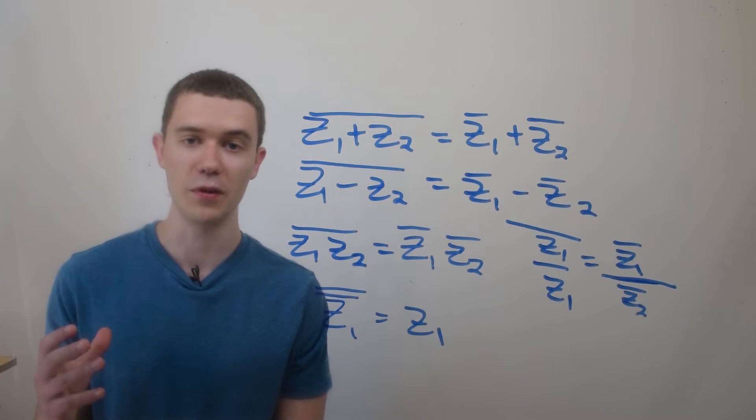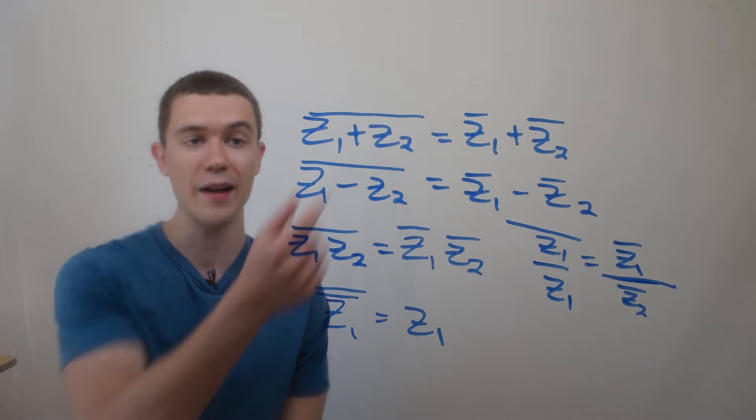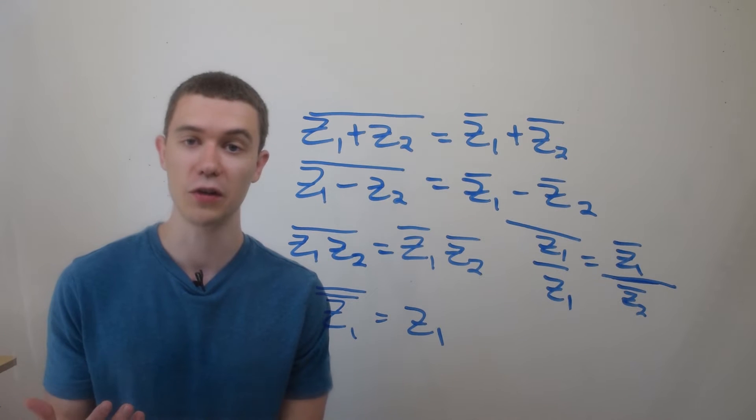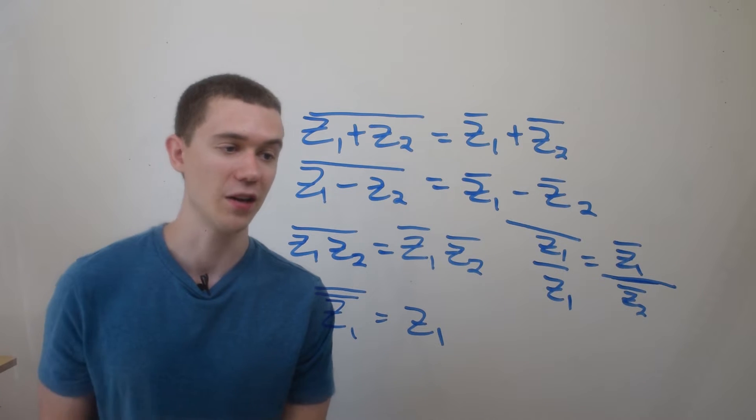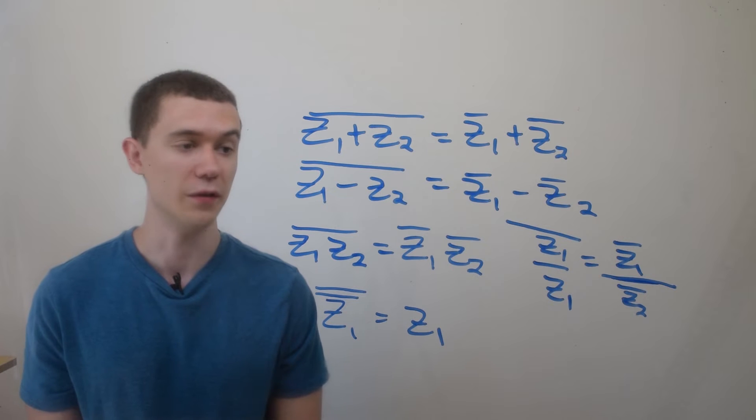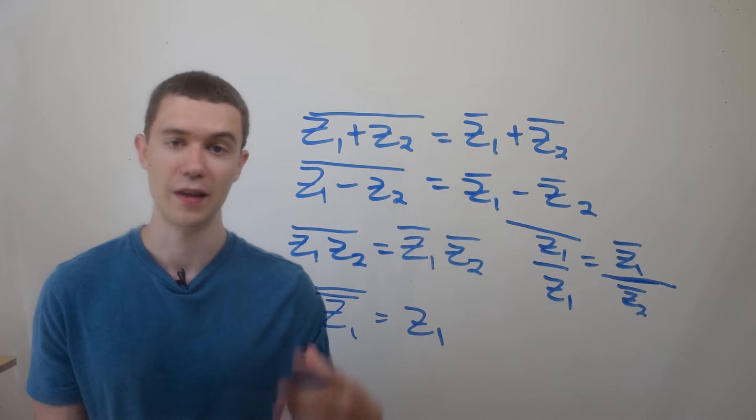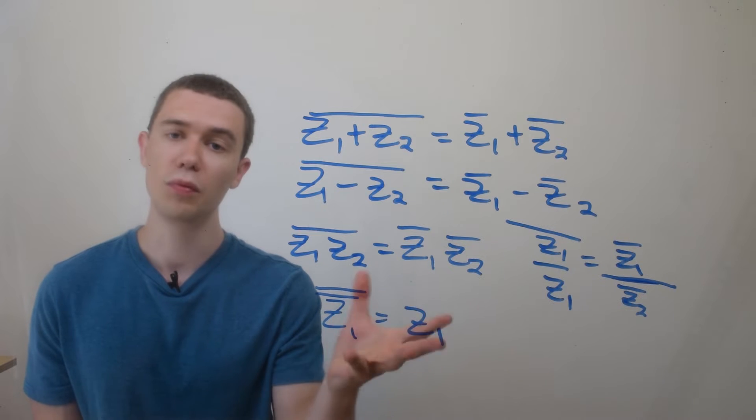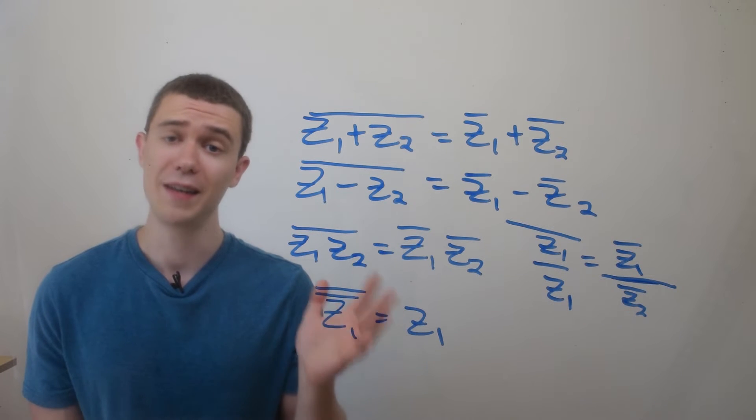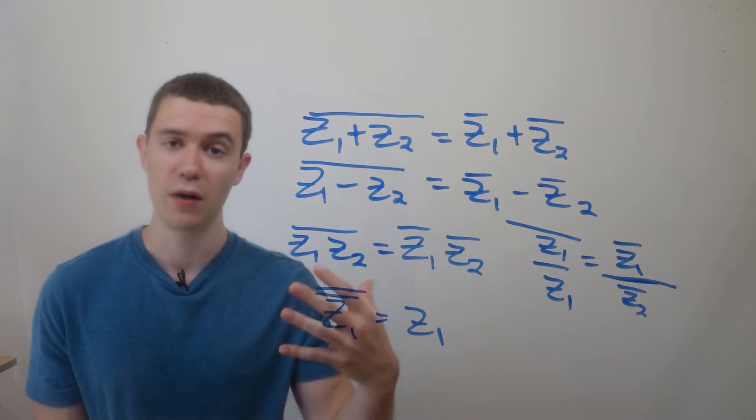Conjugation has a lot of nice properties when you're dealing with complex arithmetic. For example, if I add two complex numbers and then take their conjugate, it's the same as taking the conjugate of the two numbers individually and then adding them. It works exactly the same for multiplication and subtraction. It even works the same for division. The conjugate sort of distributes over the operation. So I won't prove these, but they're fairly easy to do when you know how to do basic arithmetic with complex numbers.